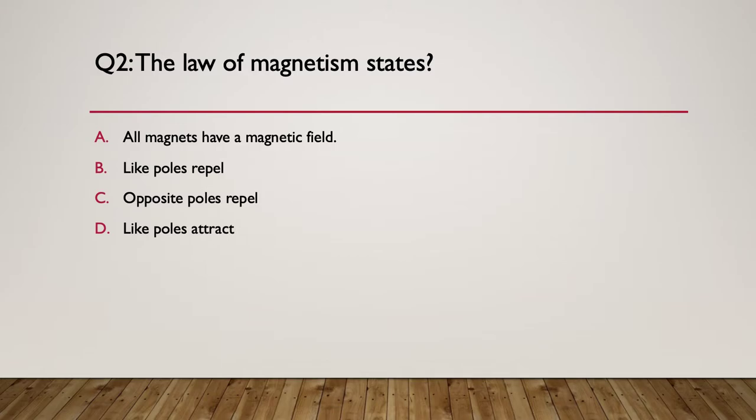Question two: what does the law of magnetism state? Is it A — all magnets have a magnetic field; B — like poles repel; C — opposite poles repel; or D — like poles attract? Pause here.